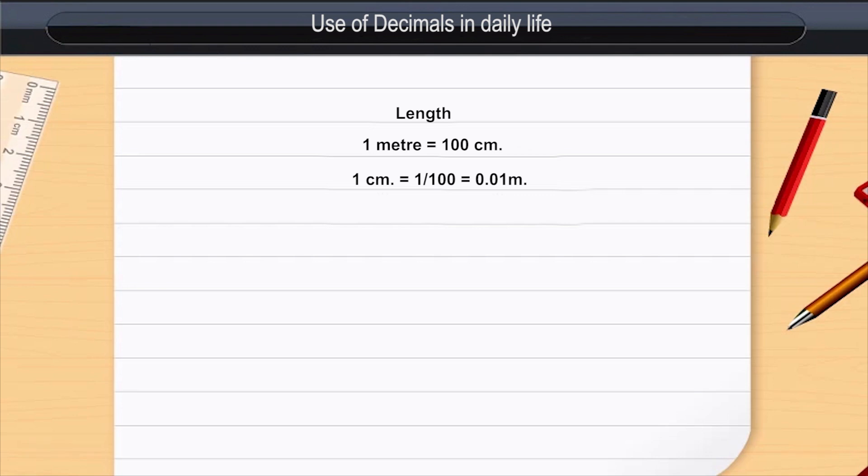Distances are also measured in kilometres. 1 kilometre is equal to 1000 metres. Therefore, 1 metre is equal to 0.001 kilometres.